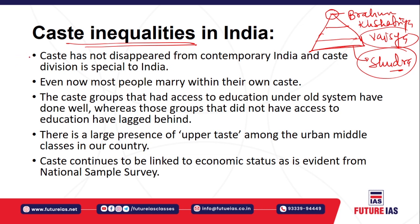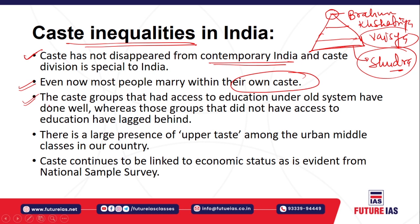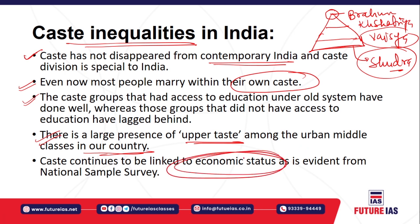The caste-based inequalities are one of the biggest problems in social harmony in India — not only in ancient India but also in contemporary India. Most people generally marry within their own caste because the caste-based prejudice and violence still exist. There was huge discrimination — Shudras cannot attain education, could not listen to the Vedas, and were restricted to live outside their locality. Without equal access to education, they were left behind, which is why upper caste people remain largely in the upper middle class. The caste is linked to economic status as evident from the National Sample Survey.